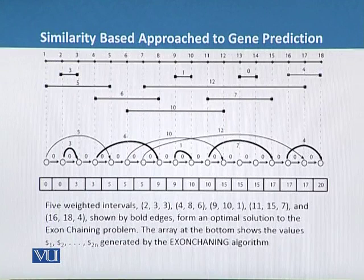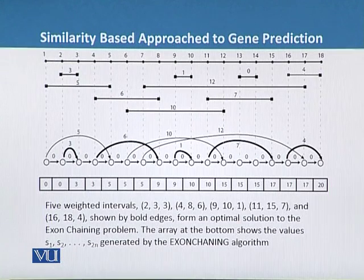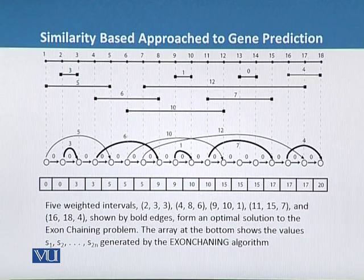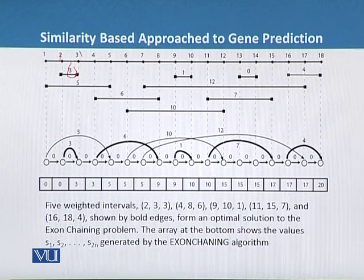We will find the putative exon by making use of the weighted intervals in this diagram. In this diagram we can see there are five weighted intervals. The first weighted interval is starting from 2 and ends up at 3, but it has a weight interval of 3 also. So we will write this as 2, 3 and 3.